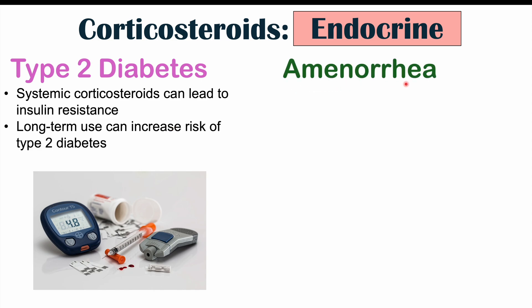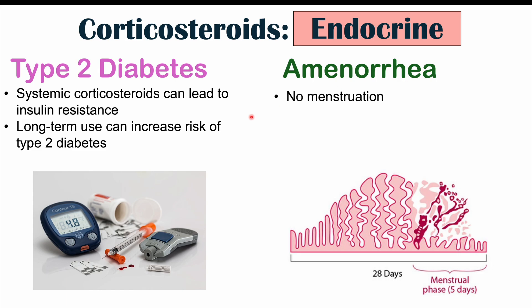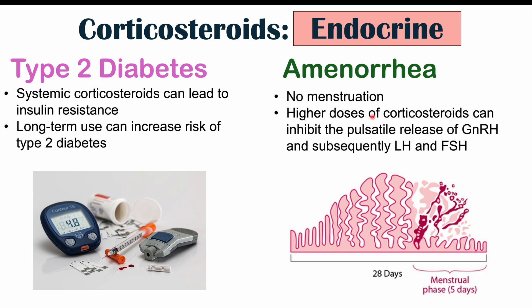We can also see amenorrhea, which is the absence of menstruation. This seems to be due to corticosteroids' effects on the brain. Higher doses especially can inhibit the pulsatile release of gonadotropin-releasing hormone (GnRH) from the hypothalamus. A normal healthy release of GnRH is pulsatile — without it, we won't have proper levels of LH and FSH, which are involved in ovulation and thickening of the endometrium. Without that occurring, we can have amenorrhea and no menstruation.